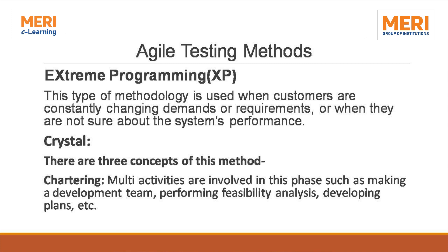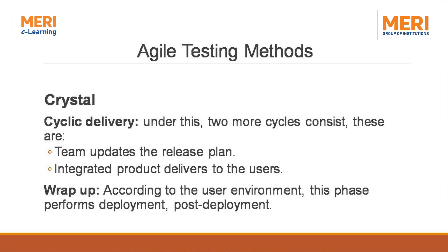Crystal is another testing method of Agile. There are three concepts of this method. Number one is charting, where multiple activities are involved such as marking a development team, performing feasibility analysis, and developing plans. Cyclic delivery is another stage of Crystal, which consists of two cycles: the team updates the release plan, and integration, which delivers the product to users. Wrap-up is the final stage, which performs deployment and post-deployment according to the user environment.